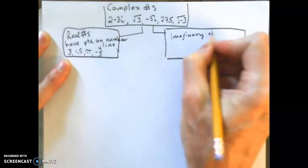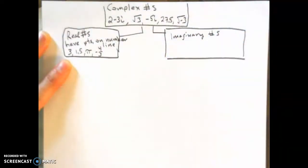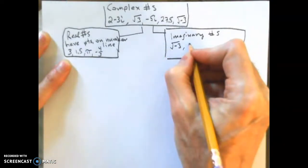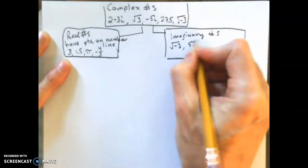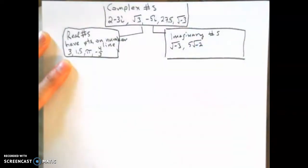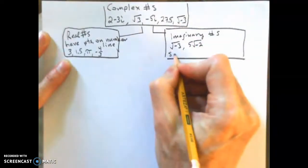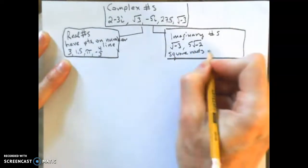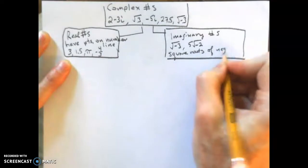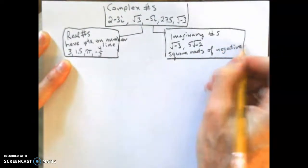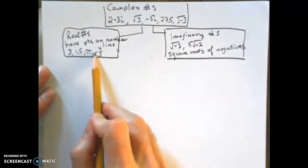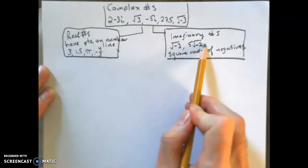Imaginary numbers are things like the square root of negative 3, or 5 times the square root of negative 2. These are basically square roots of negatives, and there are no points on the number line for them. We're going to focus on the real numbers side today, so we're done with imaginary numbers for now.